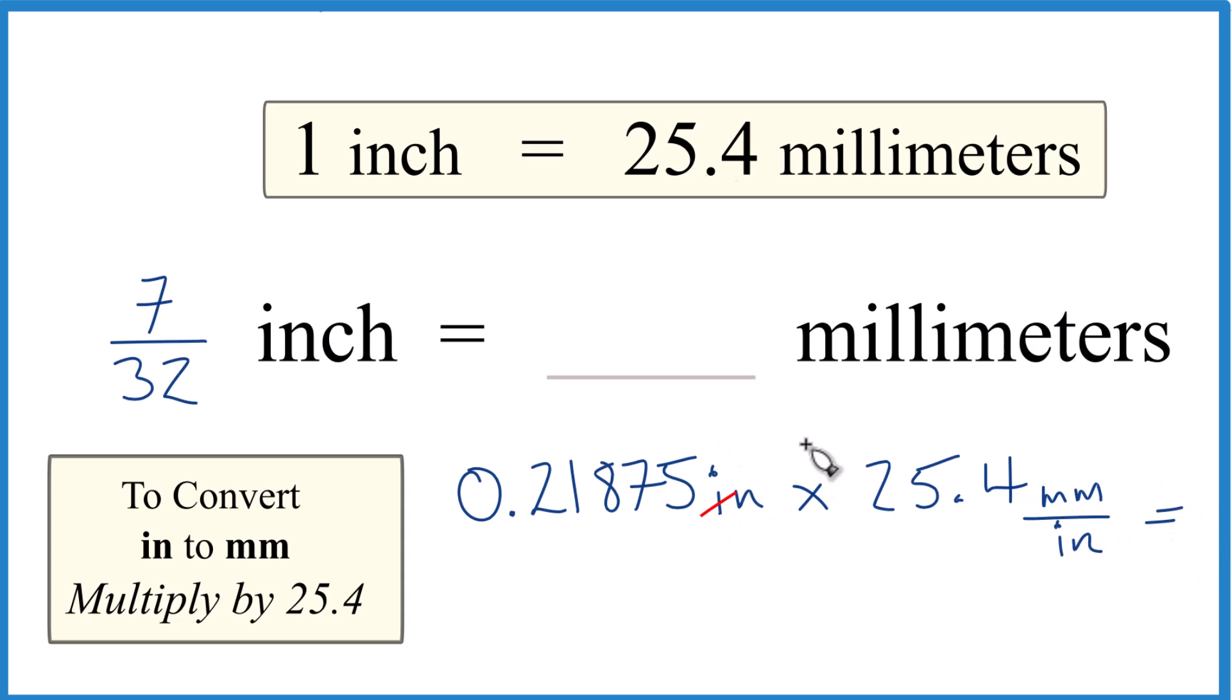When we multiply, we have inches on the top and the bottom, so those are gone. That's how you know you set it up right. We do the math, and we get this number here, but we're just going to round it to 5.56.